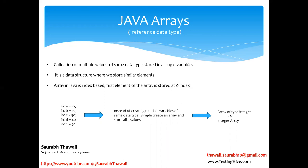In this example I'm going to explain how we can store different values of a similar data type — which is integer — into an array. We can call it an array of type integer, or simply an integer array. So let's look at the definition: array is a collection of multiple values of the same data type stored in a single variable.